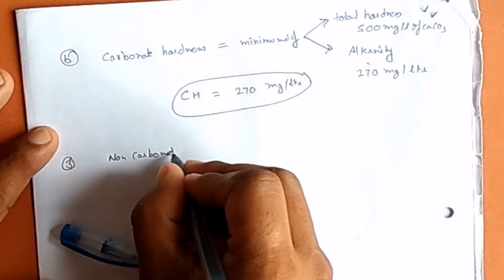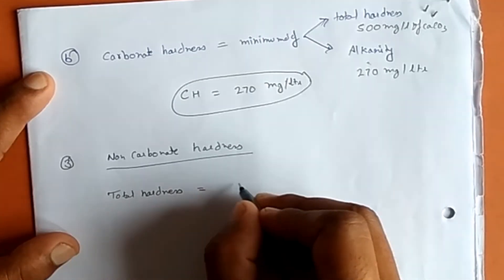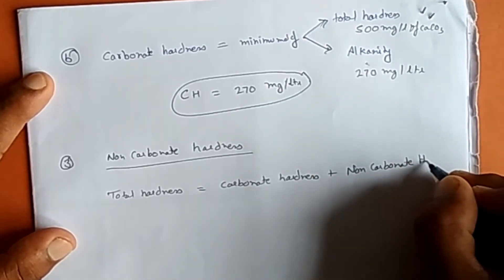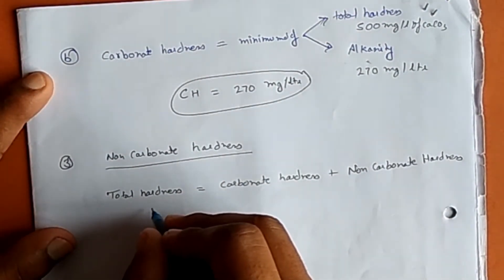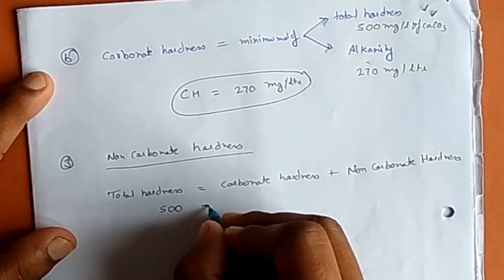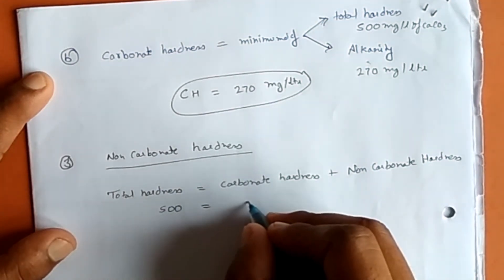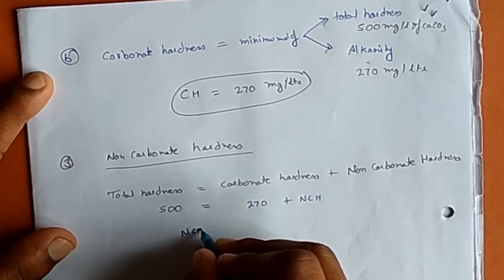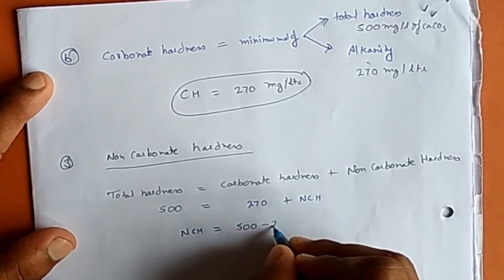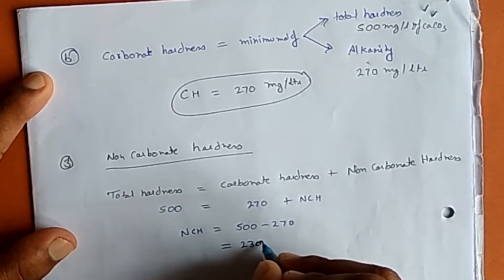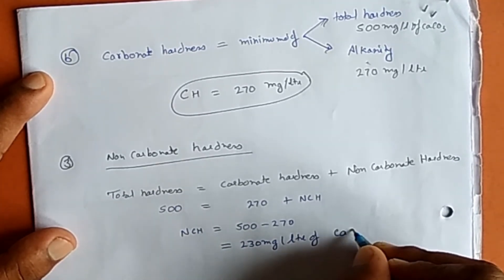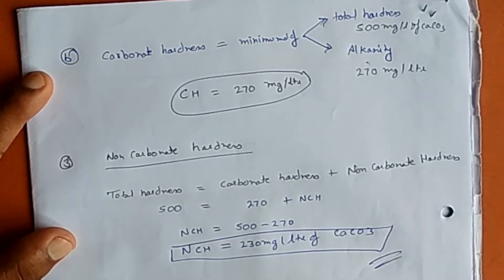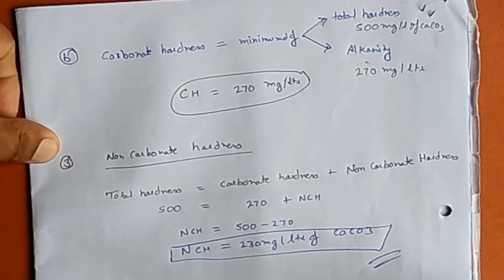For non-carbonate hardness, the relationship is: total hardness equals carbonate hardness plus non-carbonate hardness. Putting in values: 500 = 270 + non-carbonate hardness. So non-carbonate hardness comes out to be 500 minus 270, which is 230 mg per litre of CaCO₃. This sums up our solution for total hardness, carbonate hardness, and non-carbonate hardness. Thank you.